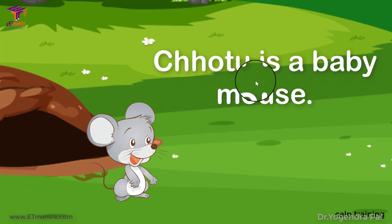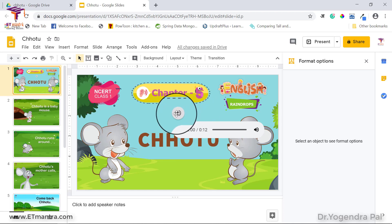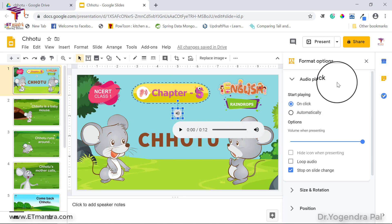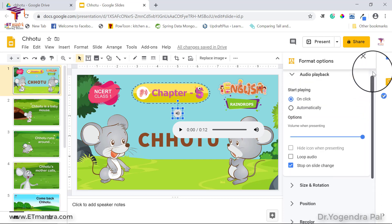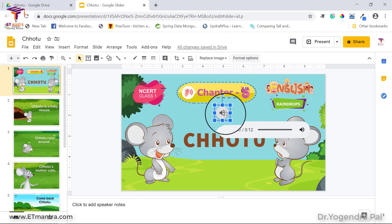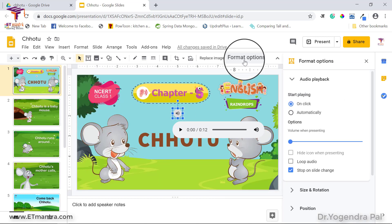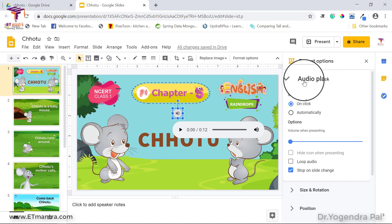You also have some format options available for the audio. Click on the audio icon and you will see the format options appear. If you accidentally close them, you can reopen the options by selecting the audio and clicking on Format Options. Let's look at these format options one by one.